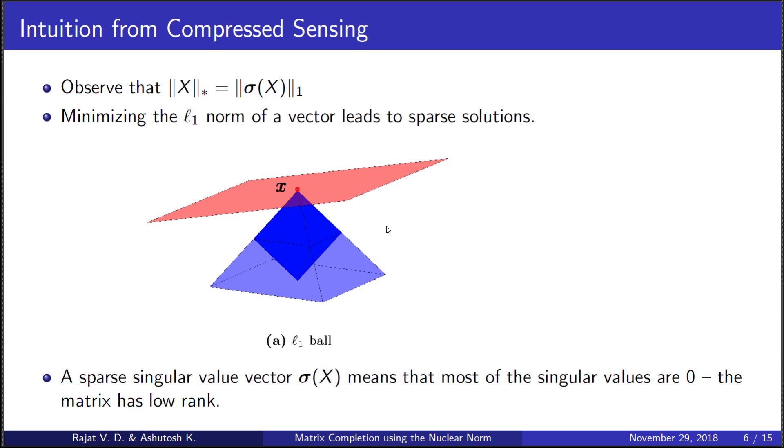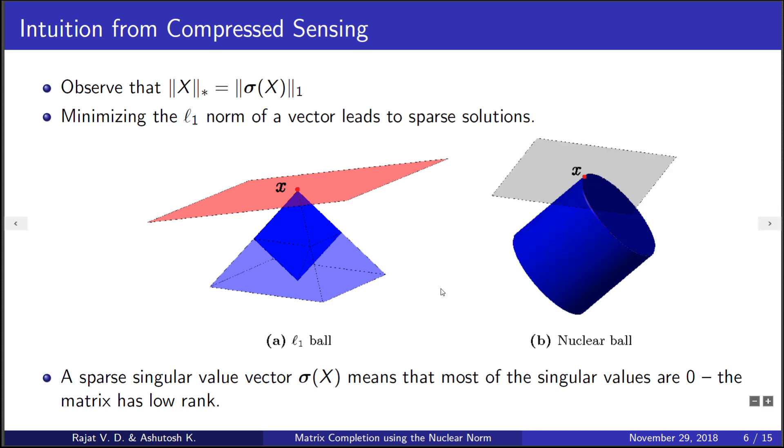We can geometrically see this for 2 cross 2 symmetric matrices, which are described by three numbers, by plotting the nuclear norm ball in those three dimensions. It turns out that the rank-1 solutions, which have sparse singular value vectors, lie on the sharp edges of the cylinder. We can then use the same argument we used for the pyramidal L1 norm ball over here as well.